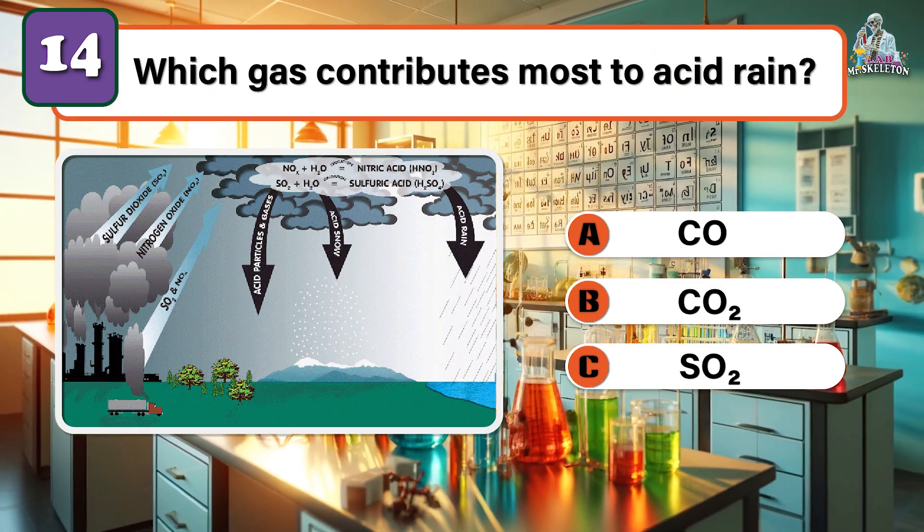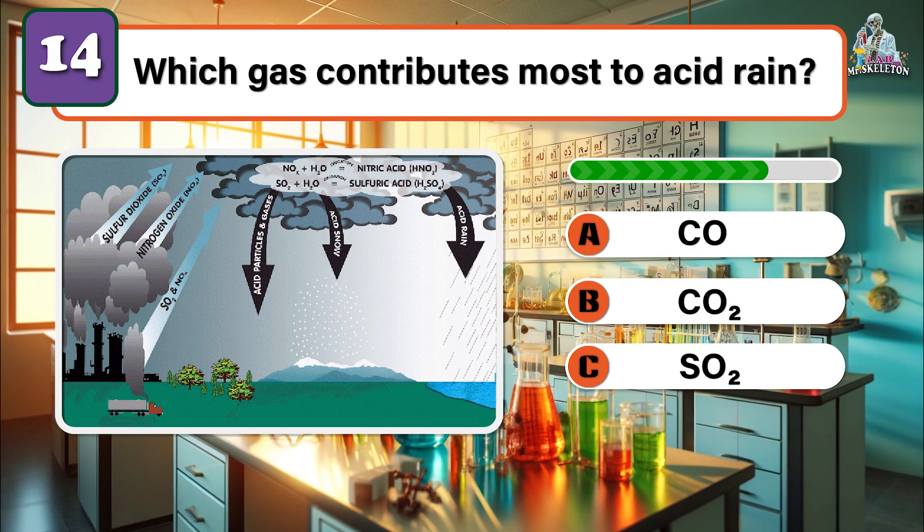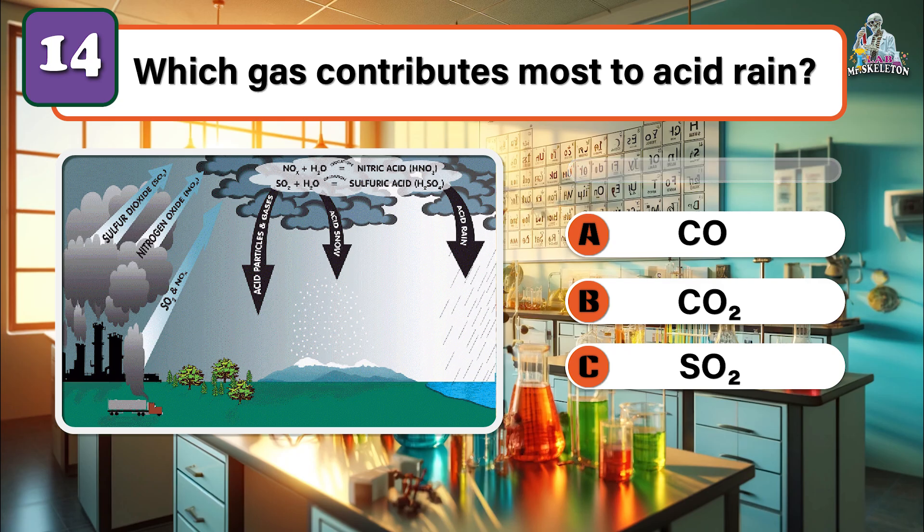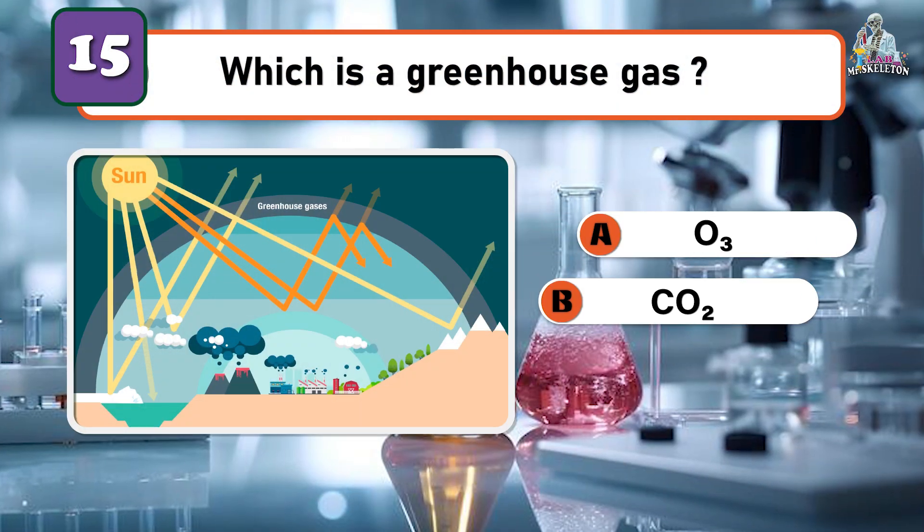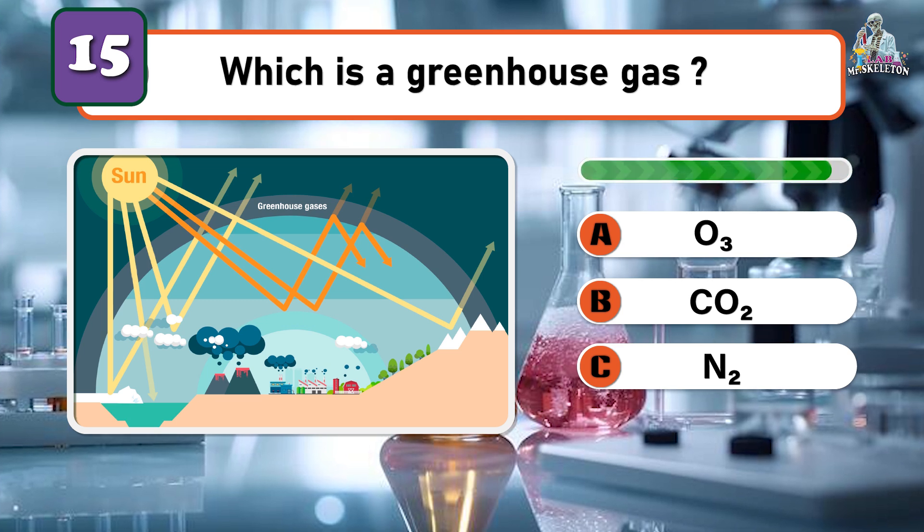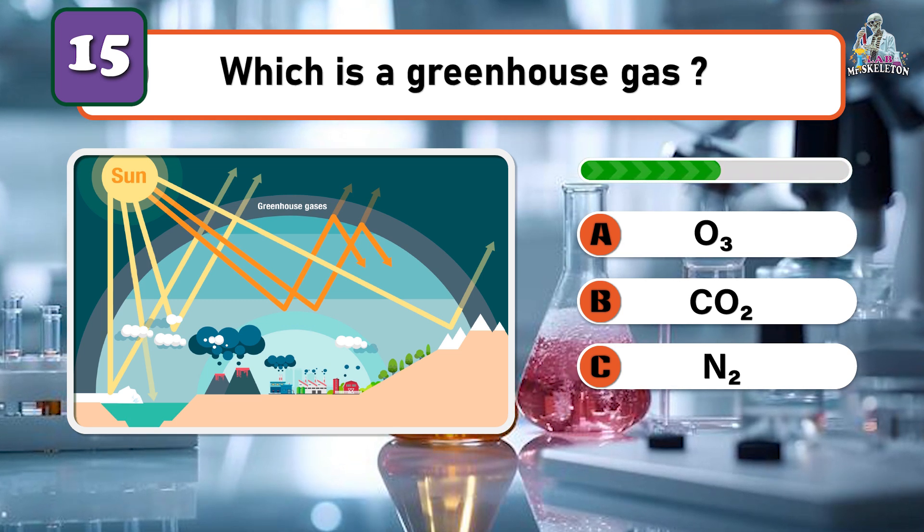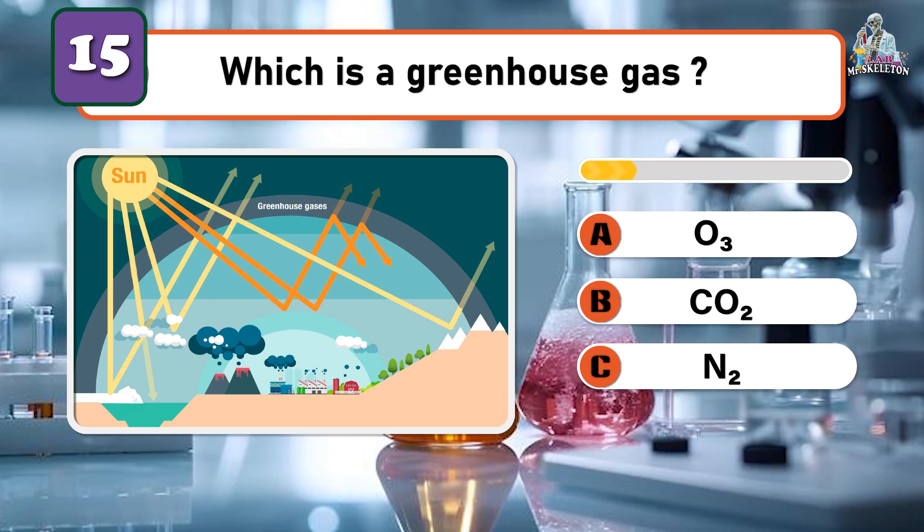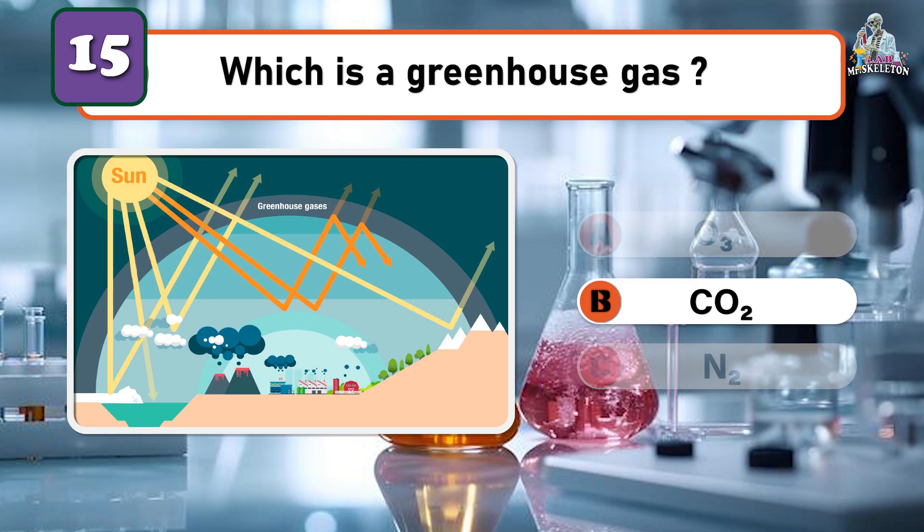Which gas contributes most to acid rain? Sulfur dioxide. Which is a greenhouse gas? Carbon dioxide.